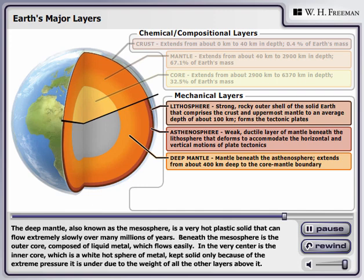The deep mantle, also known as the mesosphere, is a very hot plastic solid that can flow extremely slowly over many millions of years.